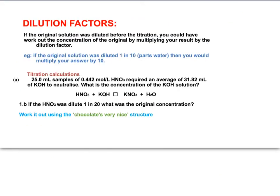Lastly, you could be told that the original solution was diluted before the titration, and so therefore you could have to work out the concentration of the original by multiplying your result by your dilution factor. So if the original sulfuric acid in the previous example had been diluted 1 in 10, so that means one lot of sulfuric acid had 10 parts of water thrown into it, then your final concentration you would just multiply by 10.